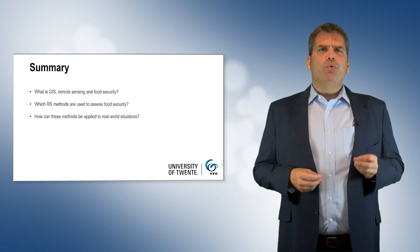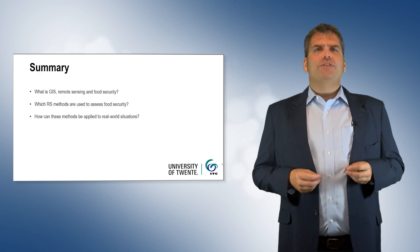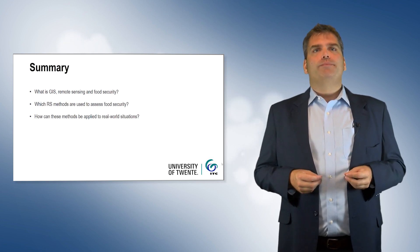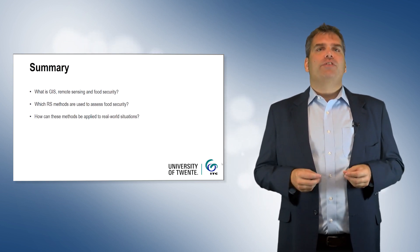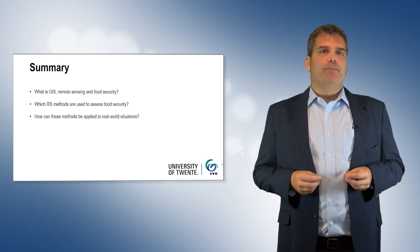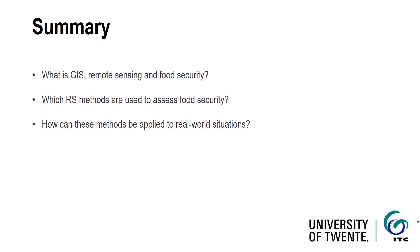In this brief lecture, we defined what geographic information systems and remote sensing are, and how remote sensing is an important source of GIS data. We also defined food security in terms of its four major components. Within this context, we were able to explore how remote sensing can be used to estimate crop yield, production, and food availability, which is one of the components. Finally, we demonstrated how remote sensing can be applied to real-world issues in food security analysis.